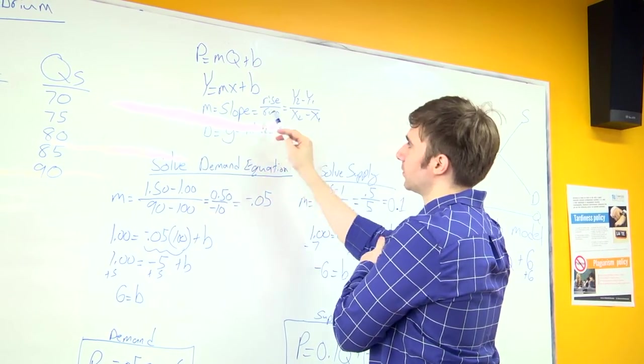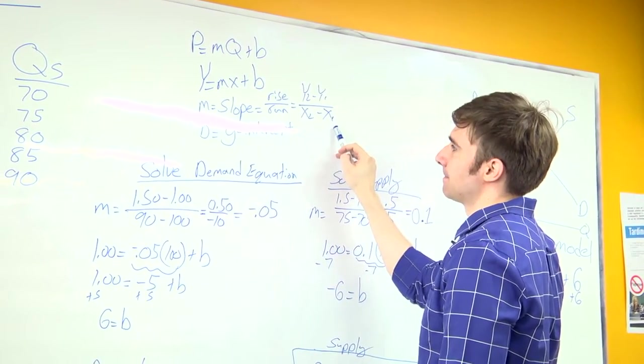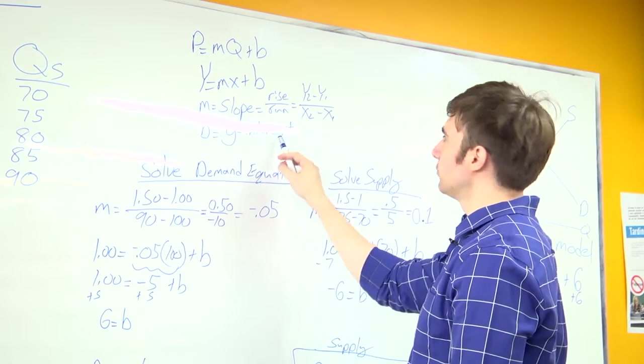M equals our slope. It's rise over run, y2 minus y1 divided by x2 minus x1. And b is our y-intercept.